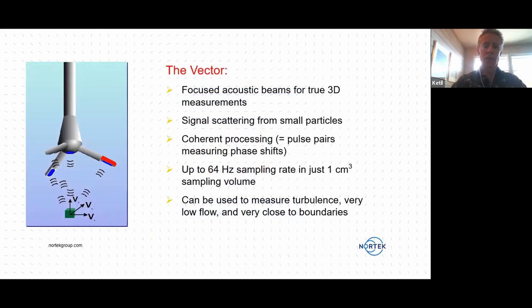So in summary, the vector uses focused acoustic beams to measure in a small sampling volume. It uses signal scattering from small particles. It uses the coherent processing technique with pulse pairs measuring phase shifts and can measure up to 64 times per second in just one cubic centimeter of sampling volume. This instrument is used to measure turbulence, low flows, very low flows down to less than one millimeter per second and very close to boundaries.